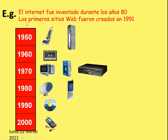Make some sentences about when a few of these things were created. Here's an example: 'El internet fue inventado durante los años 80.' The internet was invented during the 80s. 'Los primeros sitios web fueron creados en 1991.' The first websites were created in 1991. If you say 'CDs were invented' — because that's plural — you use 'fueron'. If singular, like 'the CD was invented', use 'fue': 'El CD fue inventado durante los años 90.' Or 'Los CDs fueron inventados en los años 90.'